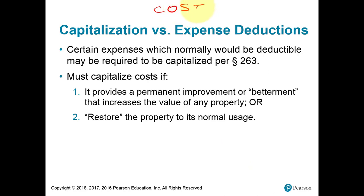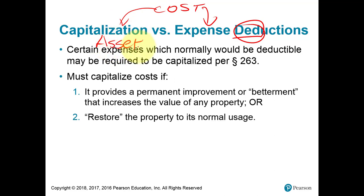A cost is either going to be treated as an expense and deducted right away, or it's going to be capitalized — that's just another term for treating it as an asset, not deducted right away, but possibly depreciated over the life of the asset. Or whatever cost you have here can be deducted as adjusted basis from the previous chapter when you sell the asset.